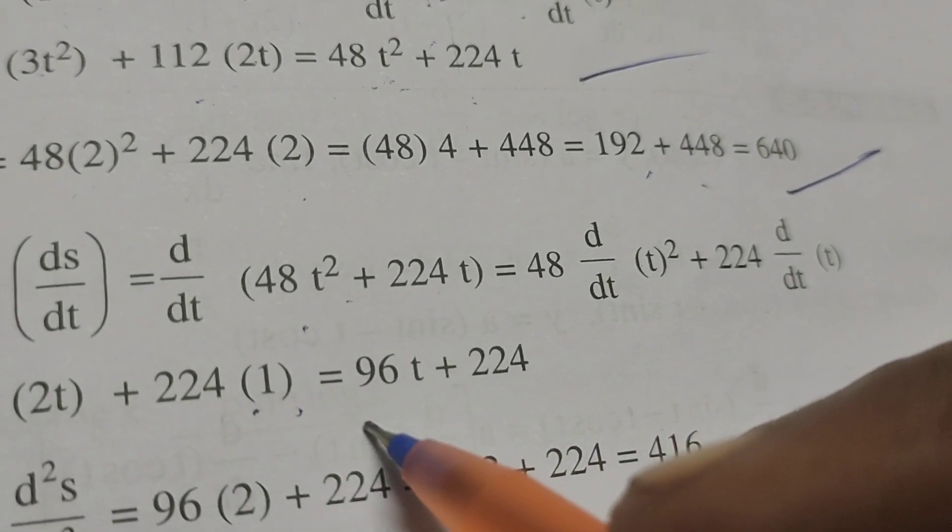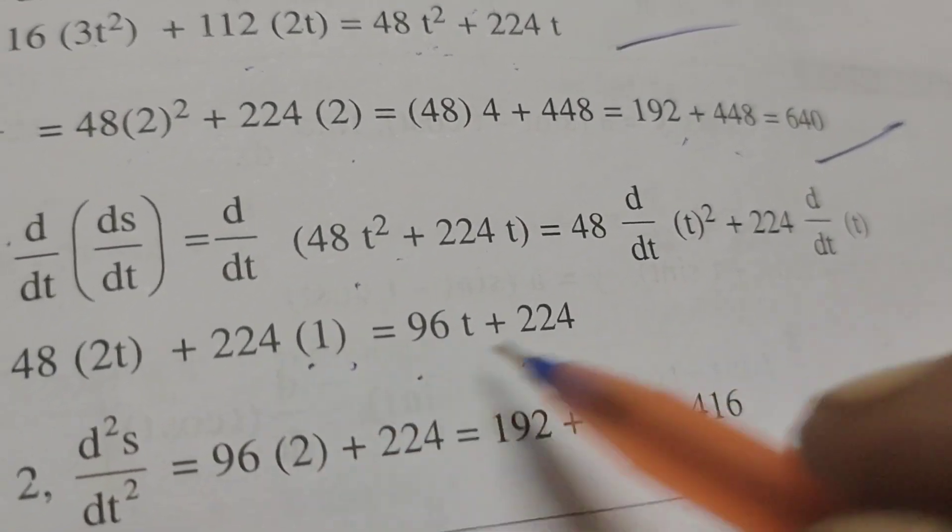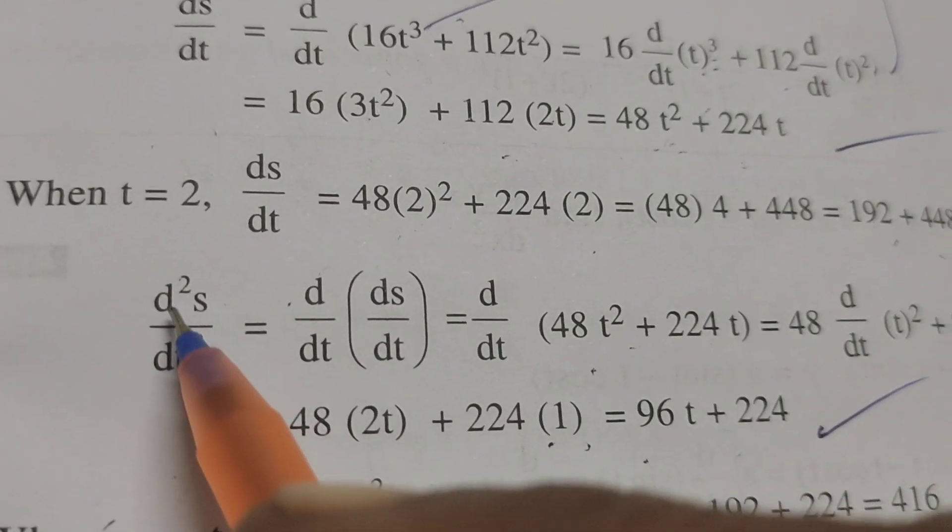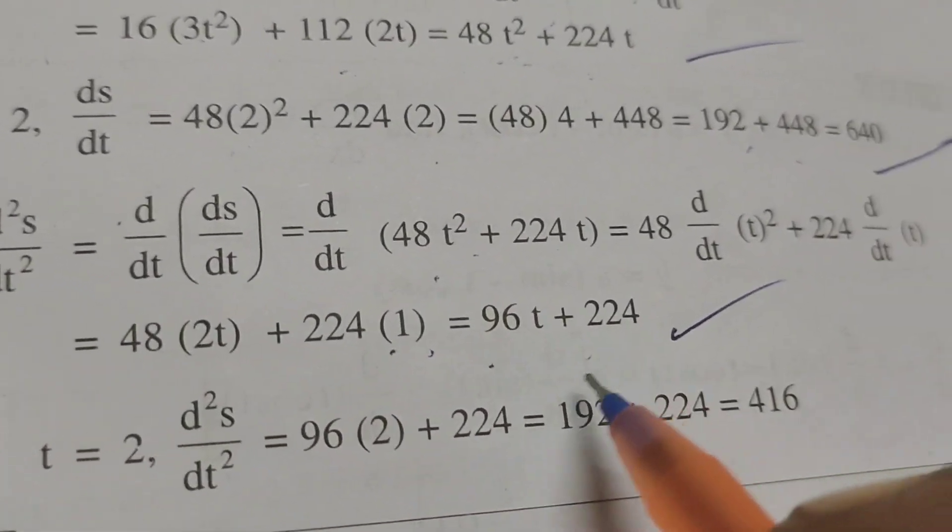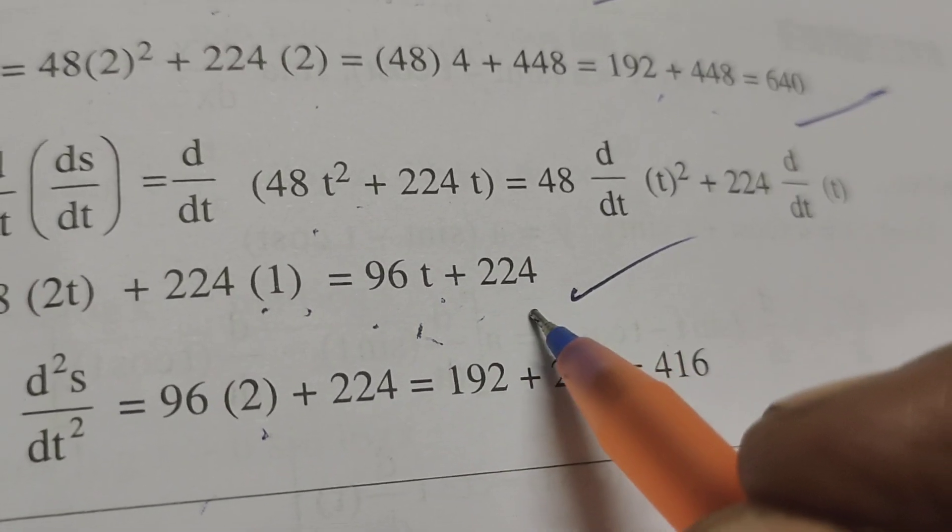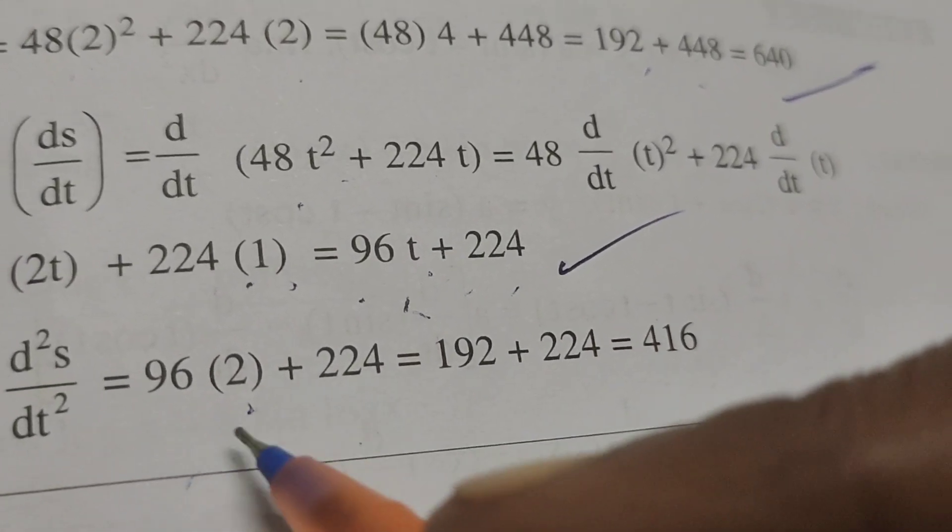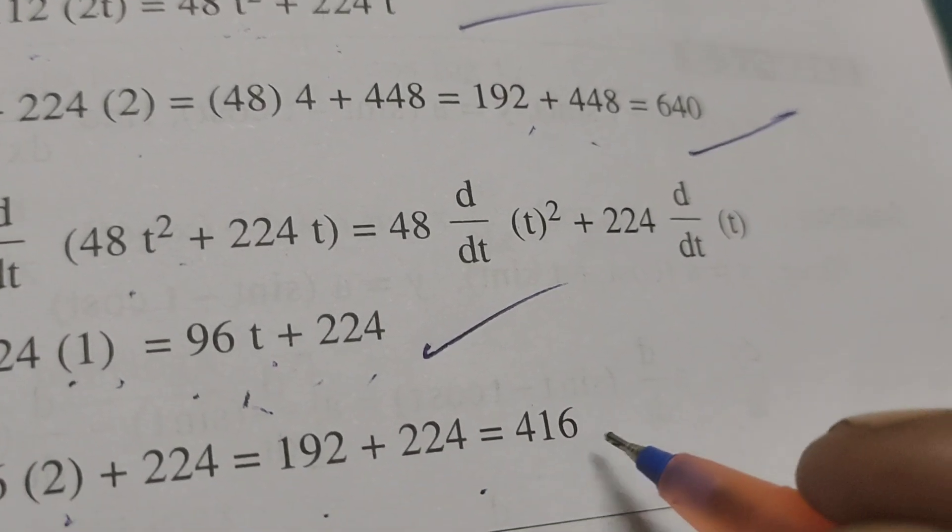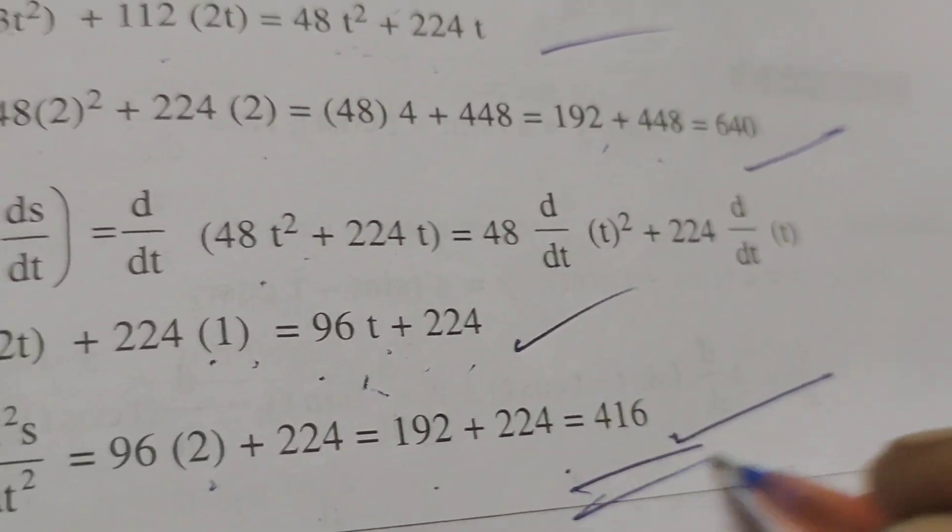When t equals 2, we substitute to get 96 times 2 plus 224, which is 192 plus 224, equaling 416 as the solution.